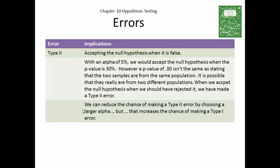That's a Type 2 error. See, the Type 2 error is when you accept the null hypothesis when it's false. For instance, with an alpha of 5%, we would accept the null hypothesis when the p-value is 30%. However, a p-value of 0.3 is not the same as stating the two samples are from the same population. It is possible that they really are from two different populations. We just didn't have enough data to show it.